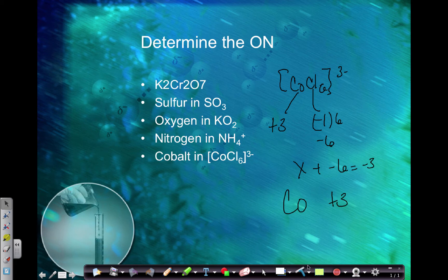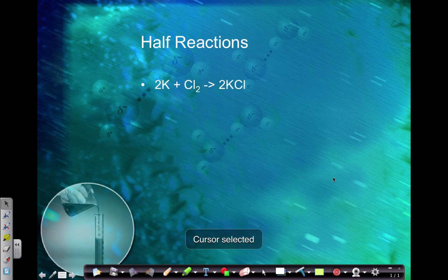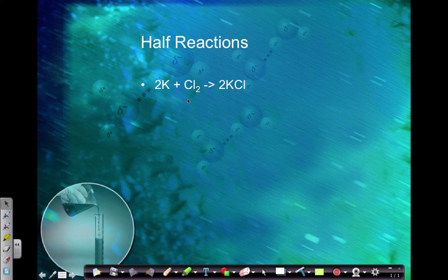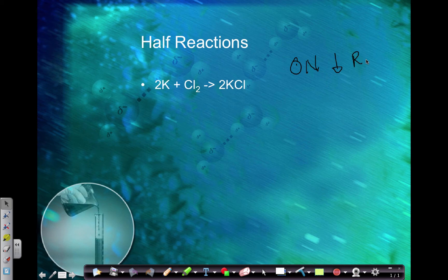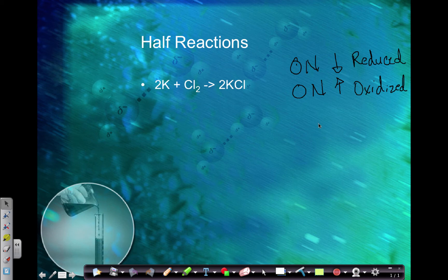So what do we do with these oxidation numbers? When we're looking at redox reactions, we need to determine the oxidation numbers to figure out if something is being oxidized or reduced. Oxidation numbers allow us to keep track of the electrons. If the oxidation number goes down in the reaction, it's been reduced — which is why they call it reduction. If the oxidation number goes up, it has been oxidized.